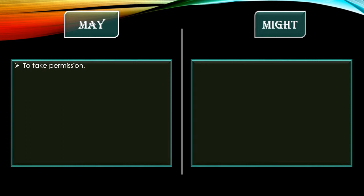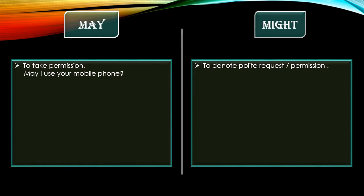May is used to take permission. This is important: can is used to give permission, and may is used to take permission. Whenever you are talking to any official, senior, teacher, or person holding a designation and you want to ask something, you should use 'may.' For example: 'May I use your mobile phone?' Might is used to denote a polite request or permission — for example: 'Might I ask a question?'